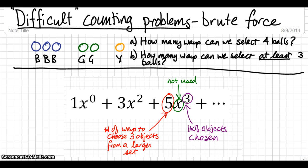The exponents will symbolize the number of objects chosen. And the coefficients, that's the numbers in front of each term, are the number of ways to choose that many objects. So, in this problem,